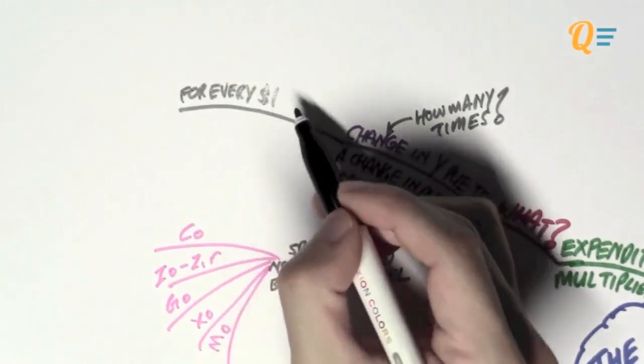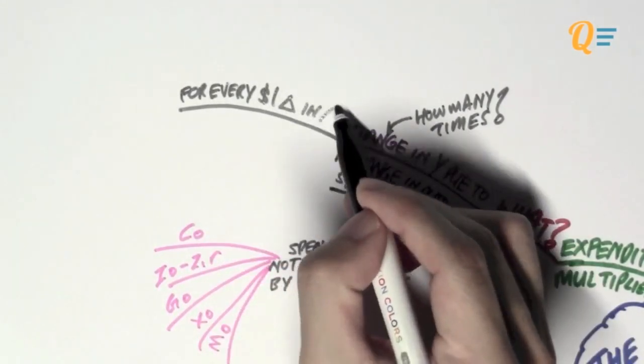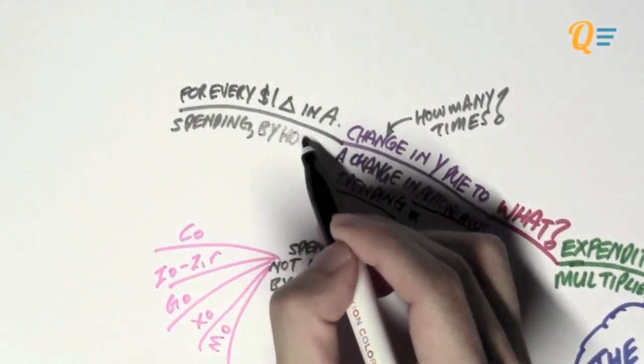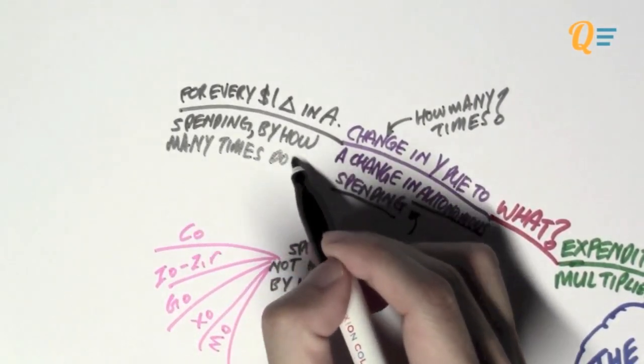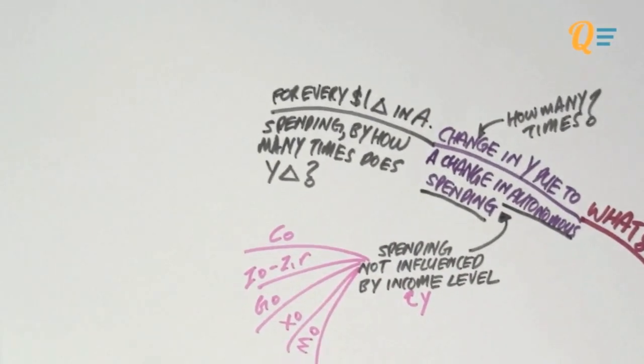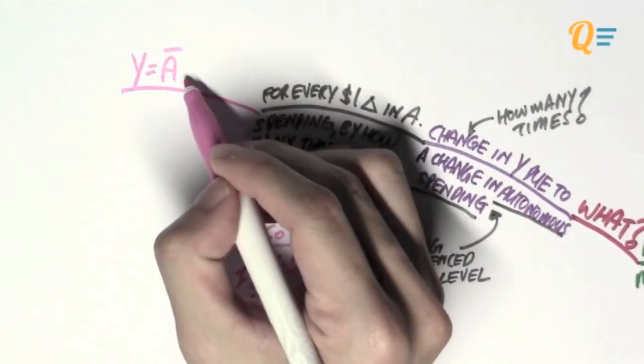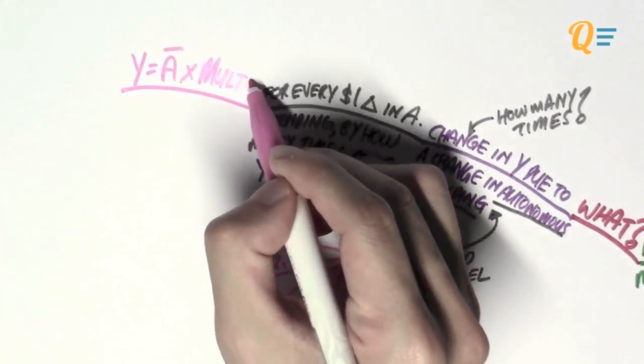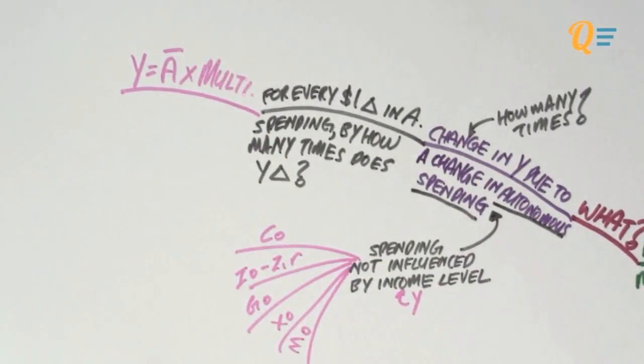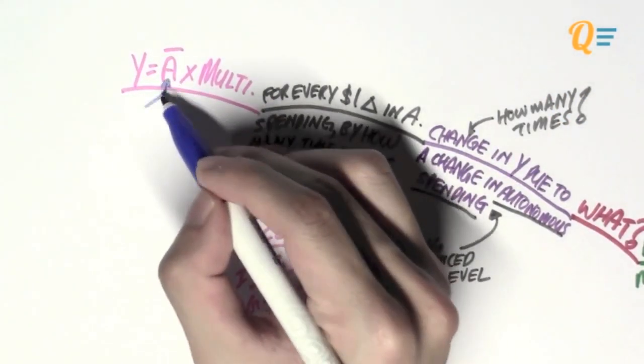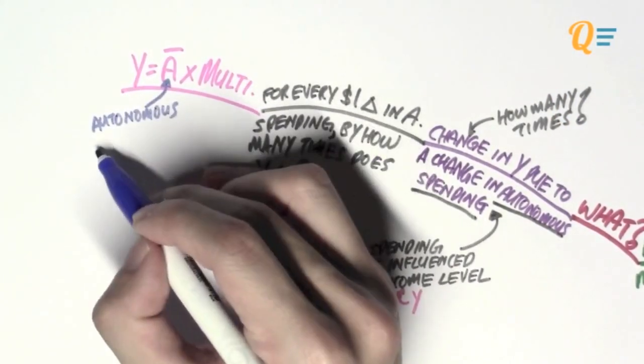So, what the expenditure multiplier is telling us is this: For every $1 change in autonomous spending, by how many times does income change? To express this in a mathematical form, what it would be is income is equal to the autonomous expenditure multiplied by a multiplier. That's why it's called a multiplier.